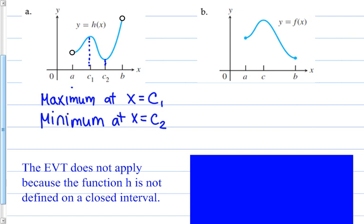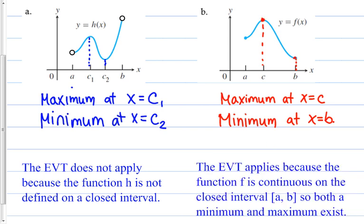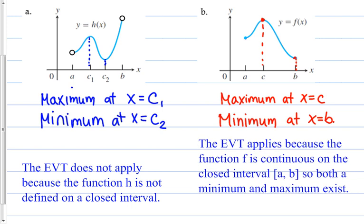For part B: this is a closed interval and the function is continuous, so the Extreme Value Theorem is going to apply. I just need to find the highest point and the lowest point. The highest point gives a maximum at x = c, and the lowest point gives a minimum at x = c. The EVT applies because f is continuous on the closed interval [a, b], so both the minimum and the maximum exist.